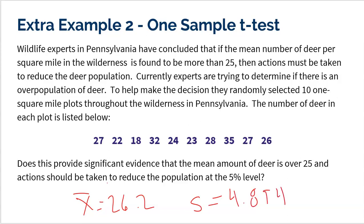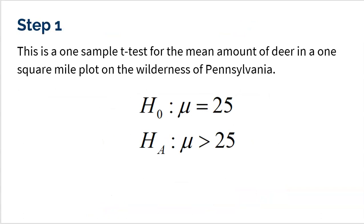Now the question is, yes, 26.2 is more than 25, but is it significantly more than 25 that I can say that overall in the entire state of Pennsylvania, we have an overpopulation of deer? So here I go with my four-step process. Step one is I'm going to conduct a one-sample t-test for the mean amount of deer in one square mile plot on the wilderness of Pennsylvania. The null is that it's 25, because 25 is okay. It's more than 25 when I have a problem. So 25 is okay.